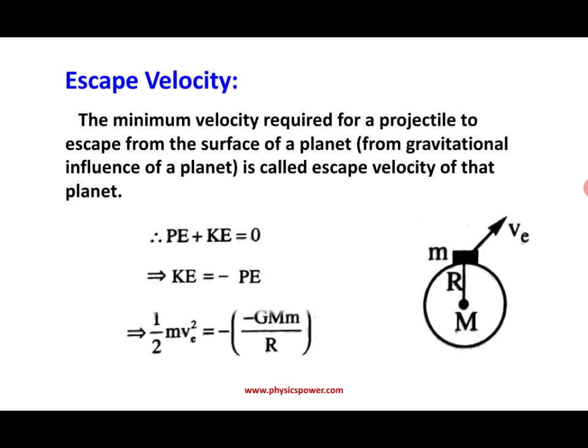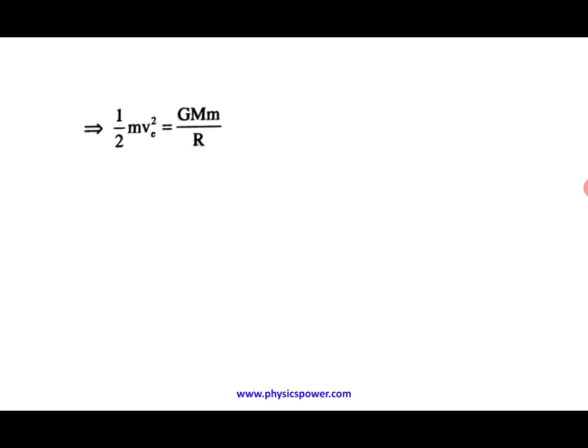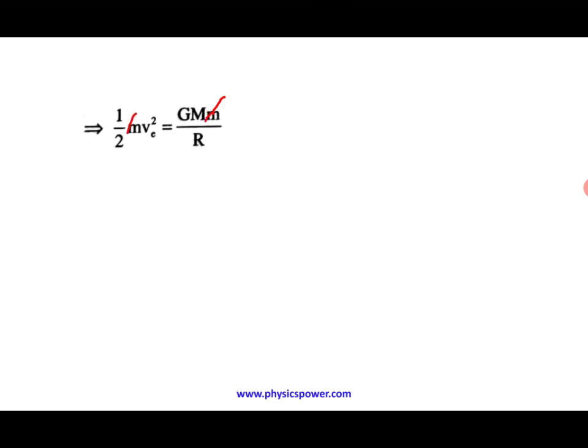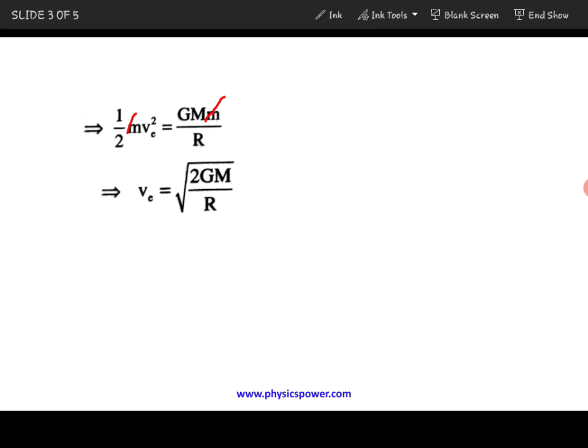Initially, the kinetic energy expression is half m VE squared, and the potential energy is minus GMm divided by R. The minus signs cancel, and the small mass m also cancels from both sides. Rearranging, the factor of 2 moves to the left side, giving: VE equals the square root of 2GM divided by R. This is the expression for escape velocity.